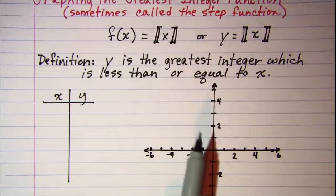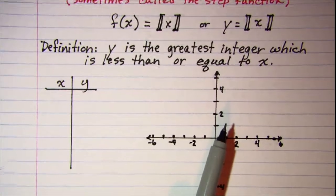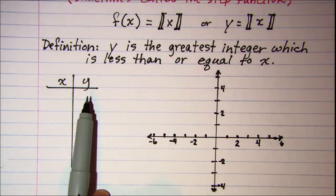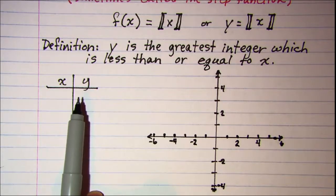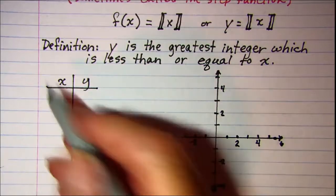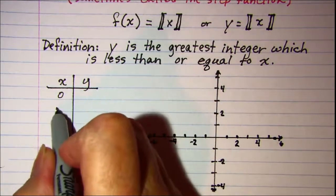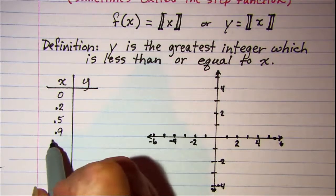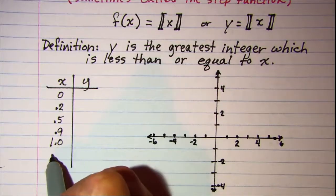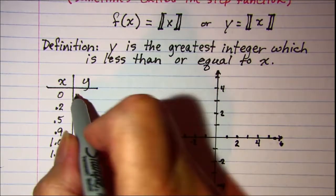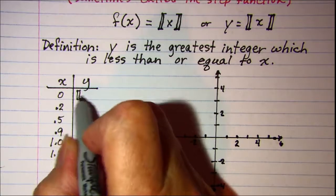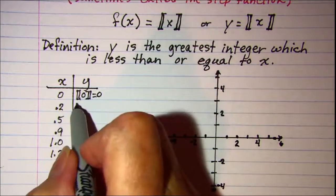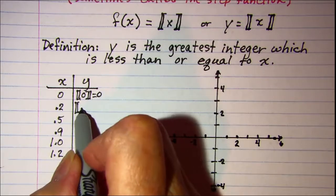To graph this greatest integer function, I'm going to put some numbers in for x and see what the y values are, then plot those to establish a pattern for the graph. Let's look at x equals 0.2, 0.5, 0.9, then 1.0 and 1.2. Recall that the greatest integer of an integer is that integer. So when we have the greatest integer of 0.2...